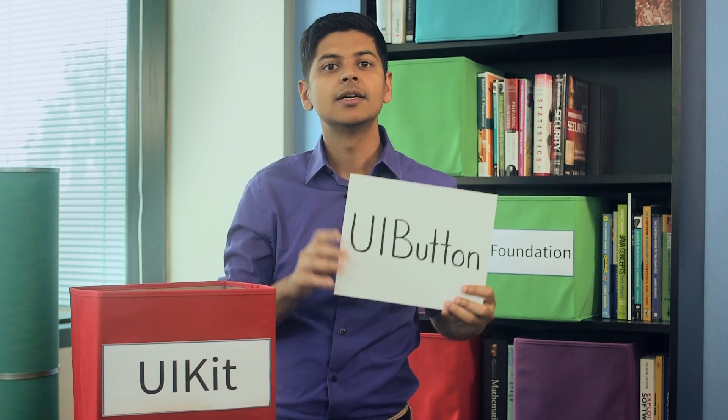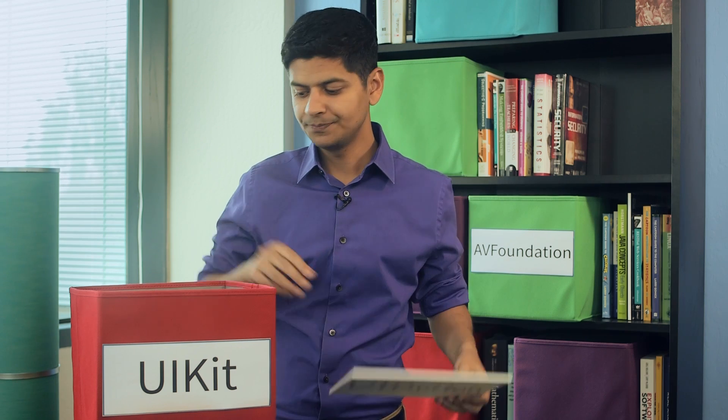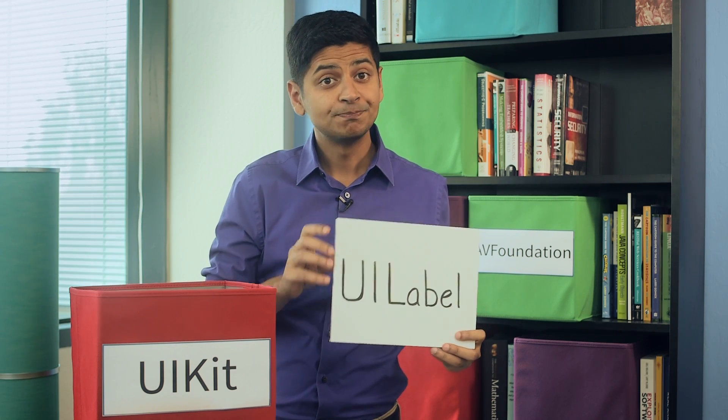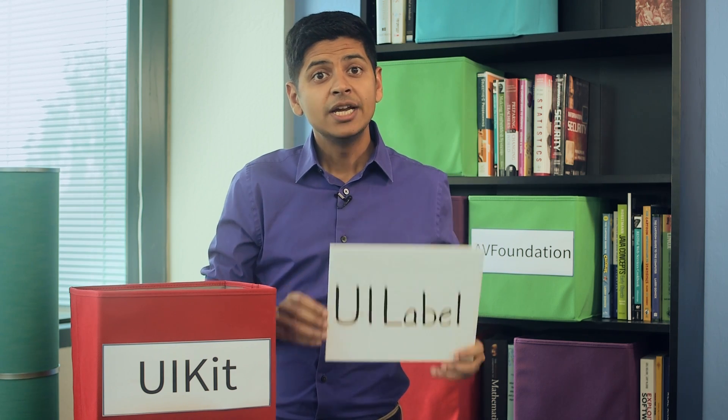In the last lesson we saw that UIKit contains many visual items like buttons and labels. Inside UIKit are several other classes that help us manage these visual elements.